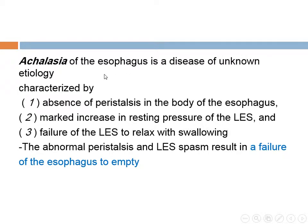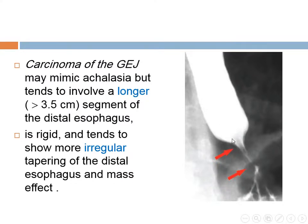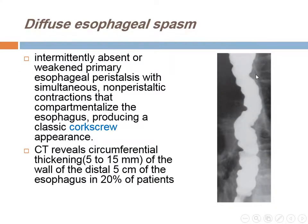Achalasia of the esophagus is a disease of unknown etiology characterized by absence of peristalsis, marked increase in resting pressure, and failure of the lower esophageal sphincter to relax, resulting in failure of the esophagus to empty. Radiologically, we can see uniform dilatation of the esophagus with air-fluid level, absence of peristalsis with tertiary waves common in early stage, beak deformity of the lower esophageal sphincter, and increased incidence of epiphrenic diverticulum and esophageal carcinoma. Carcinoma of the gastroesophageal junction may mimic achalasia, causing secondary achalasia, but is differentiated from primary achalasia as it is longer and irregular. Diffuse esophageal spasm: primary peristalsis is absent, replaced by tertiary contractions appearing as a corkscrew pattern. On CT, circumferential thickening of the distal 5 cm of esophagus is seen in 20% of patients.